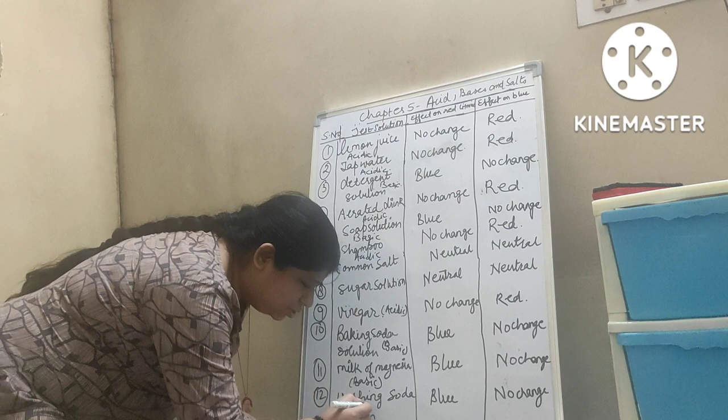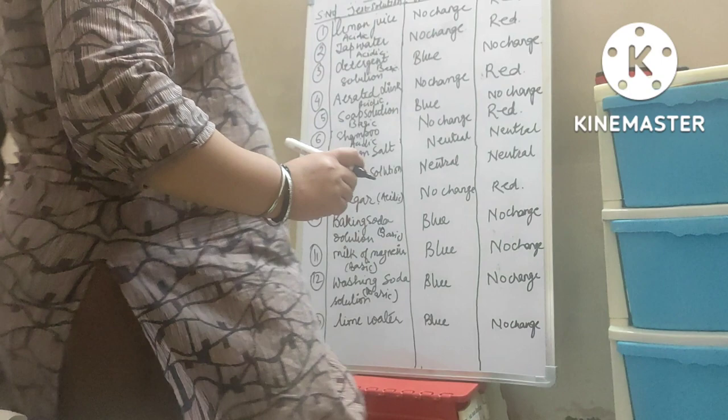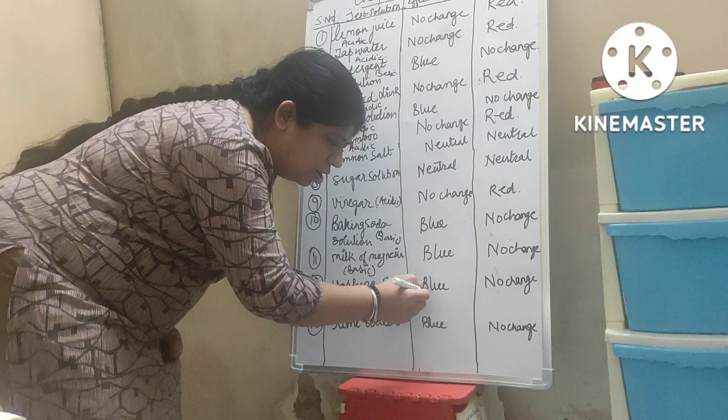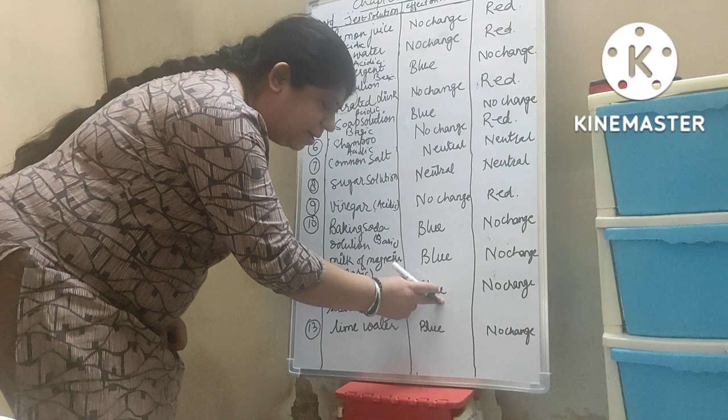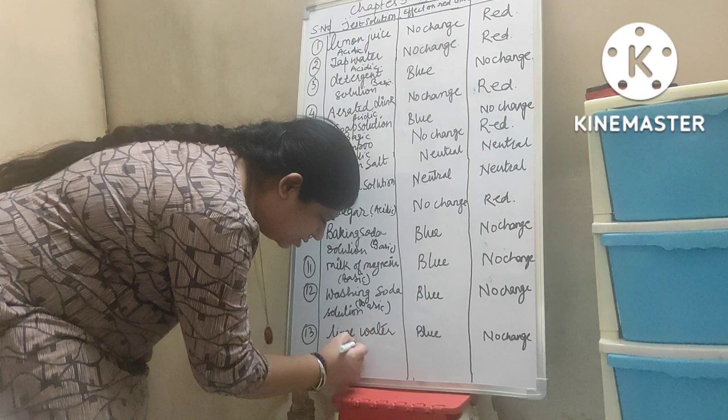Washing soda, as you all know, is basic in nature. It will change red litmus paper to blue and no change in blue litmus paper. Lime water, as you all know, is basic in nature. It will change red litmus paper to blue and no change. Thank you. Hope the concept is understood to all of you.